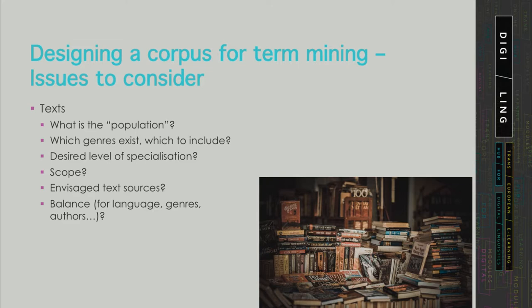The next consideration is scope — what is the target size of your corpus and how many texts you want to include. If you would like a certain degree of representativeness and variety, but on the other hand you have just a handful of very long texts alongside a number of smaller texts, you should consider shortening some of the long texts rather than including them in their entirety.